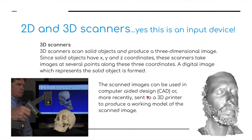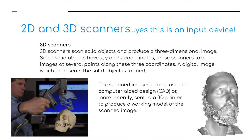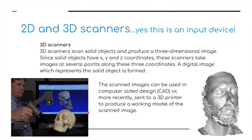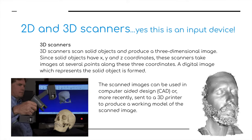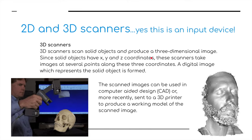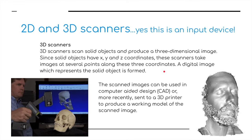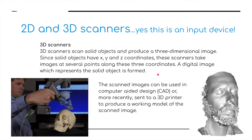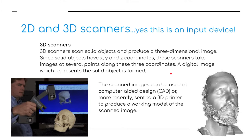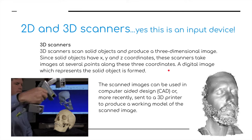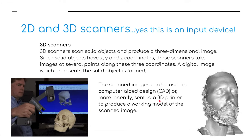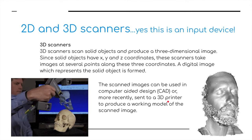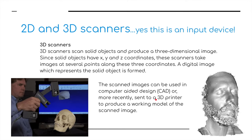3D scanners work in a different way. They're used to capture 3D objects — for example, capturing a 3D representation of a human skull. They scan solid objects and produce a three-dimensional image. Since solid objects have three coordinates — X, Y, and Z — these scanners take images at several points along these three coordinates. The scanner image can be used in computer-aided design (CAD), or more recently, sent to a 3D printer to produce modelled work from that scanned image.